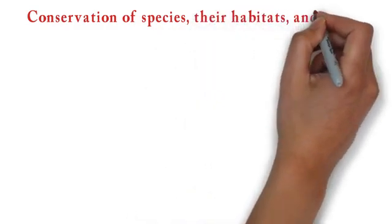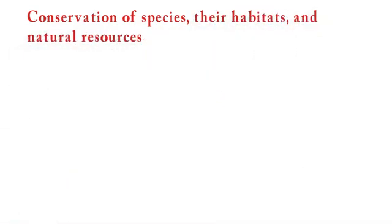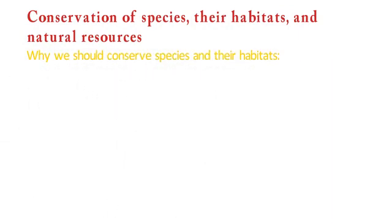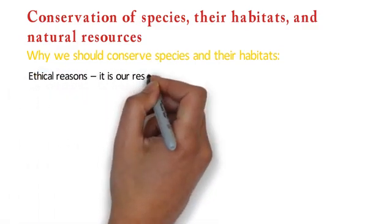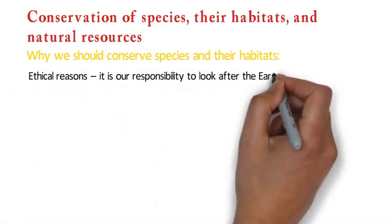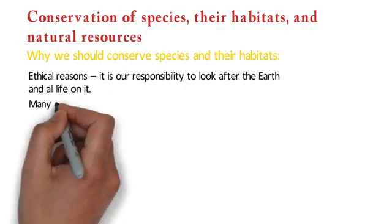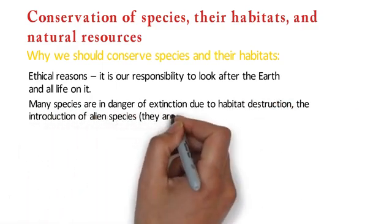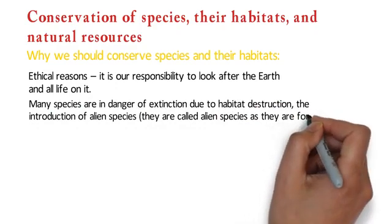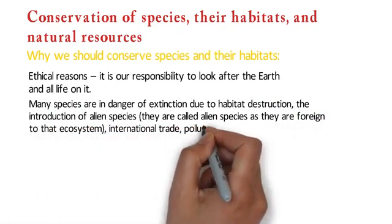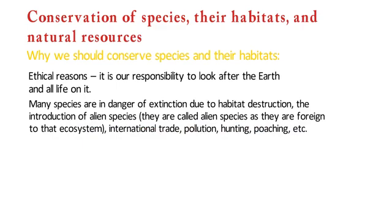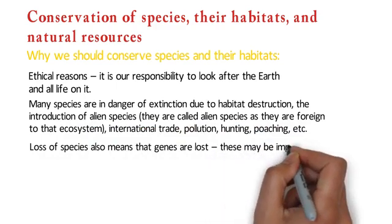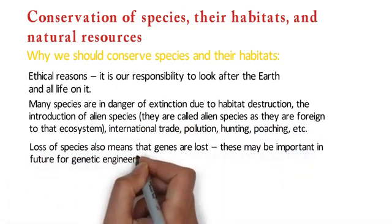Conservation of species, their habitats, and natural resources. Why we should conserve species and their habitats. For ethical reasons, it is our responsibility to look after the earth and all life on it. Many species are in danger of extinction due to habitat destruction, the introduction of alien species — called alien species as they are foreign to that ecosystem — international trade, pollution, hunting, poaching, etc. Loss of species also means that genes are lost, which may be important in the future for genetic engineering.